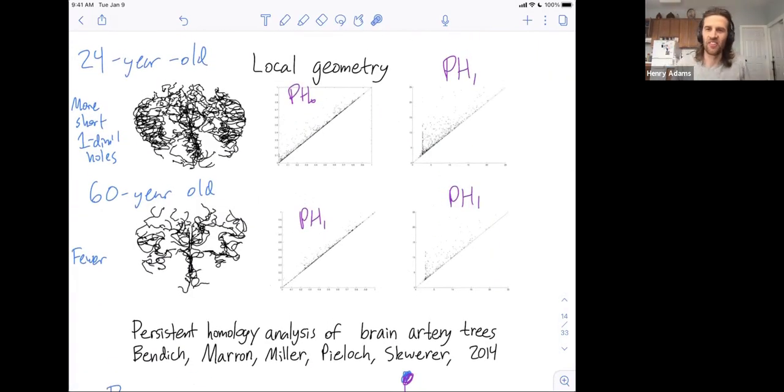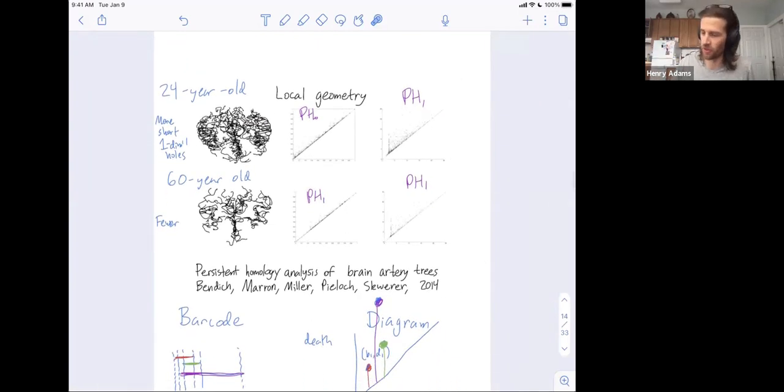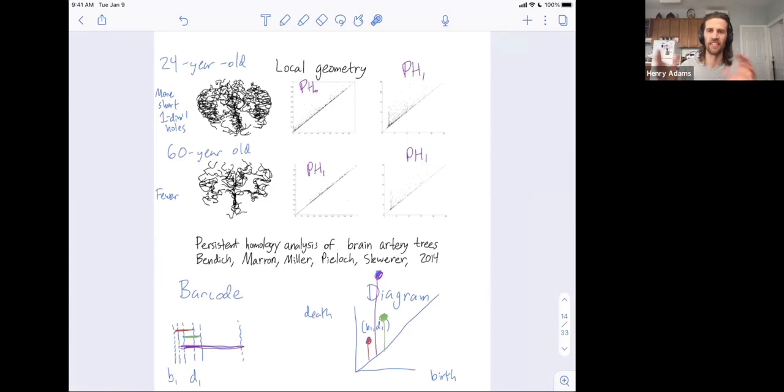All right. So I think I'll end there. That's another example of a data set where folks are using persistent homology to measure local geometry. And they use this with success on machine learning tasks. They can identify one brain from the other. And this is also an introduction to the difference between barcodes and diagrams and how you go back between them.